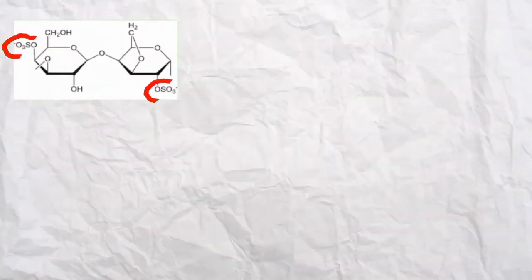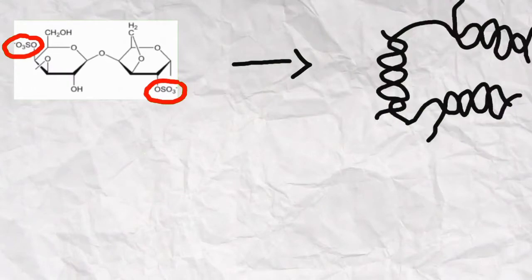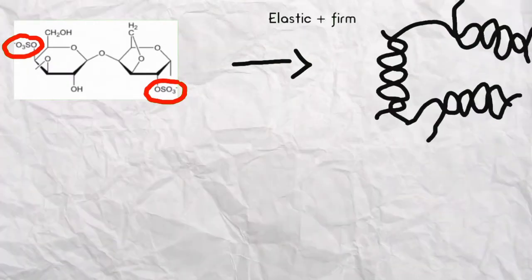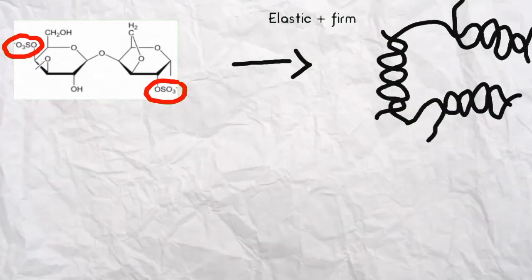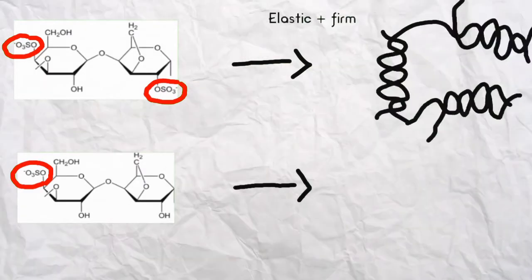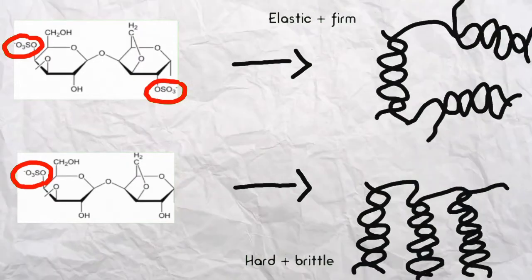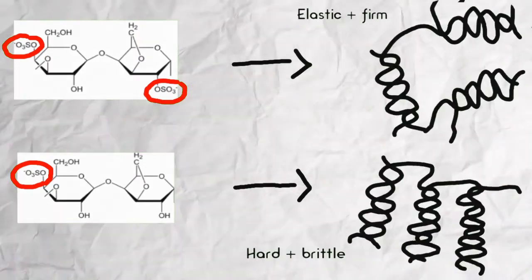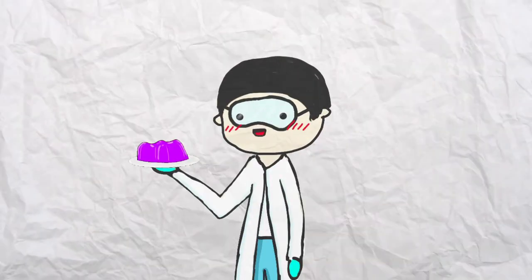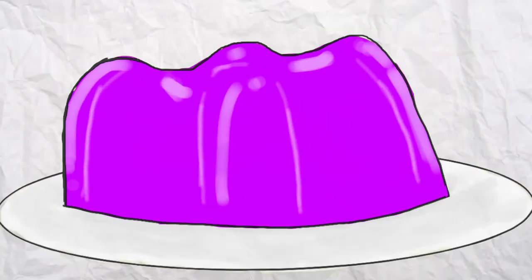Due to the two sulfate groups in iota carrageenan, the gel cannot form compactly, which results in elastic and firm properties. However, kappa carrageenan has only one sulfate group, which is able to form a compact structure, resulting in a harder and more brittle texture.